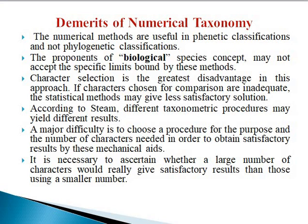If the characters chosen for comparison are inadequate, the statistical methods may give less satisfactory solutions. Different taxometric procedures may yield different results. A major difficulty is choosing a procedure and the number of characters needed to obtain satisfactory results. It is necessary to ascertain whether a large number of characters would really give better results than those using a small number of characters.